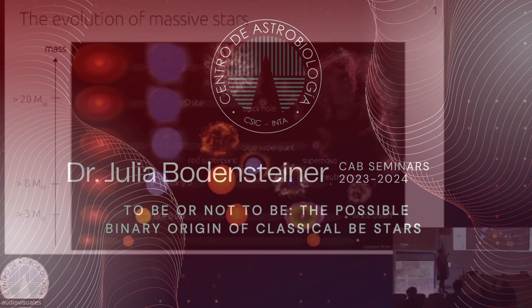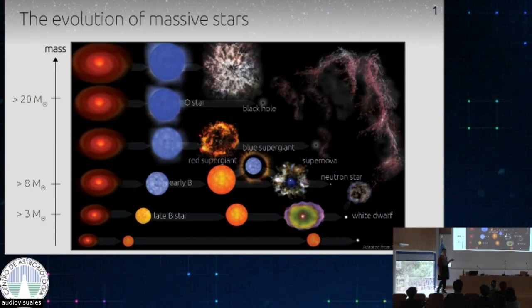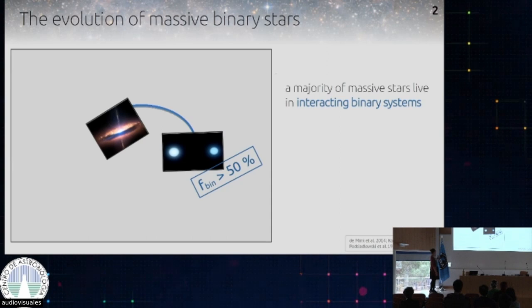This looks very similar to a textbook from maybe 10 or 15 years ago. But recently, in the last 20 years, a lot of observations have shown that it is not that simple. If we look at massive stars and check what kind of systems there are right after star formation, we find that a lot of them are in binary systems, and a majority of those are in binary systems where the two stars interact as well.